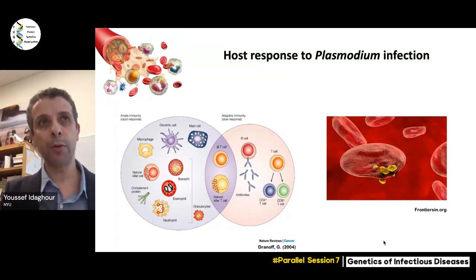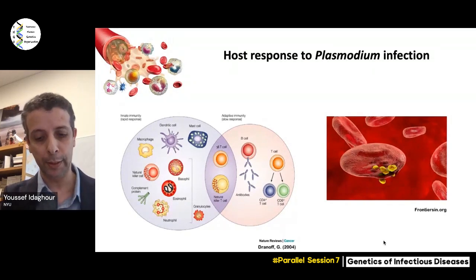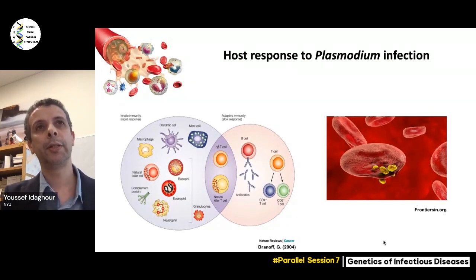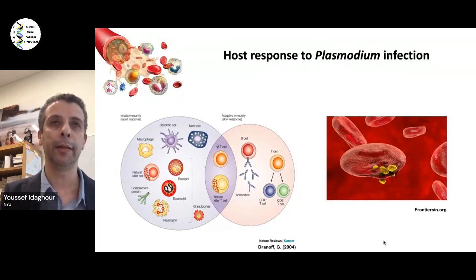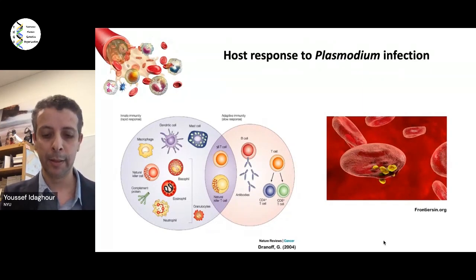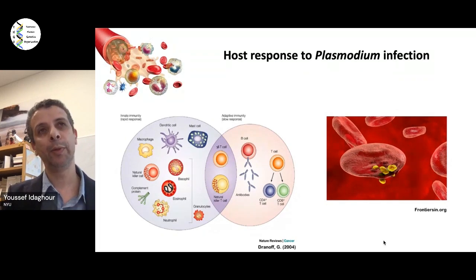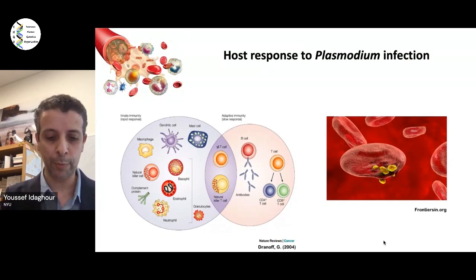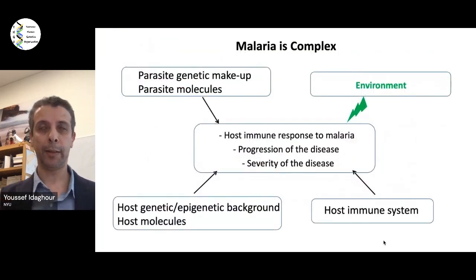During the course of infection, as the parasite undergoes the liver stage then transitions into the blood stage, the immune system tries to control the infection or eliminate the parasite. You can also imagine the number of interactions that can take place between the parasite and the host, and that's basically the focus of our work. Malaria is very complex, like most infectious diseases.